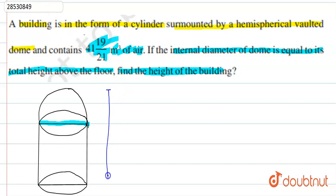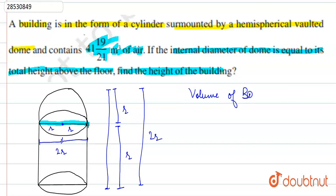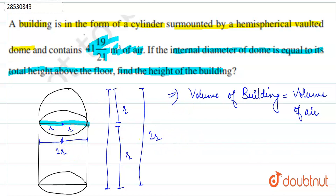This is the height and this is the height we need to find. Suppose we set the radius as r, so this distance is r. The internal diameter equals the total height — if the diameter is 2r, then the total height is also 2r. That means the cylinder's height is r, and the hemisphere's radius is also r, making the full height 2r.